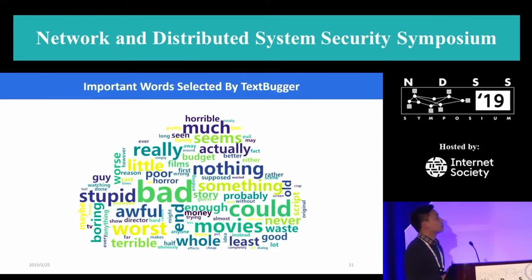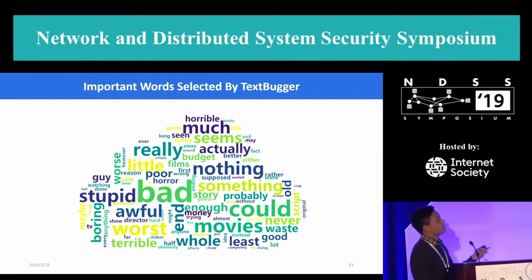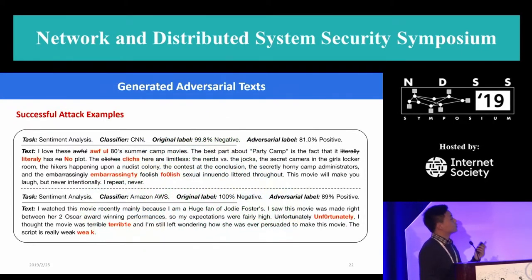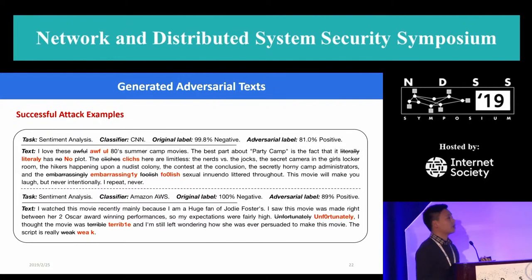First of all, we showed several qualitative evaluation results of TextBugger. This figure is the visualization of the important words selected by TextBugger, and we can see that the found important words are indeed negative ones. This figure shows two pieces of successful attack examples, and we can see that although they contain small perturbations, they preserve most of the original meaning and have little impact on human understanding.